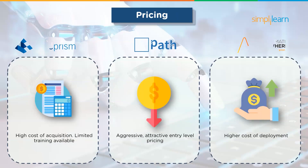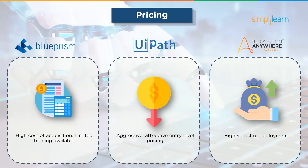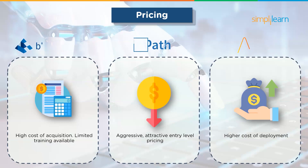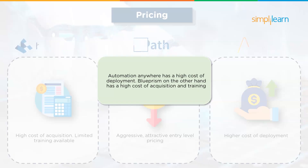Next up we have Pricing. Blue Prism has a high cost of ownership and offers restricted training. UiPath on the other hand offers effective, pleasant entry-level pricing. Automation Anywhere turns out to be expensive with a higher cost of deployment — overall, more expensive than the rest.